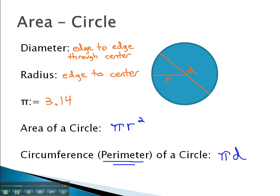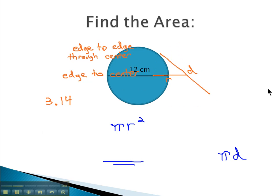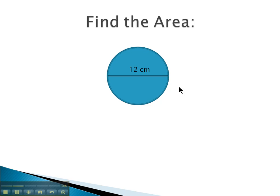Let's try some examples where we find areas or circumferences of circles. In this first example, we know the distance from one side to the other is 12 centimeters, and we're asked to find the area.